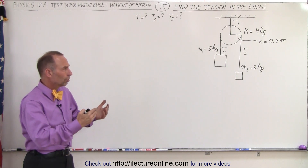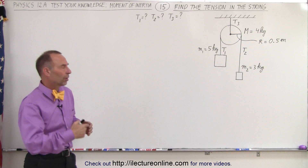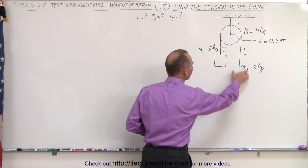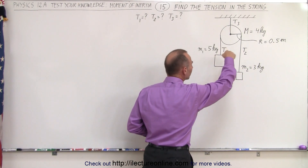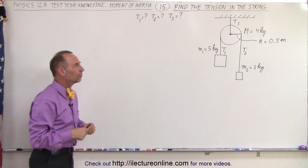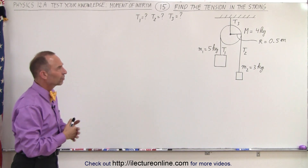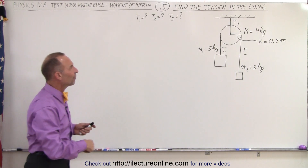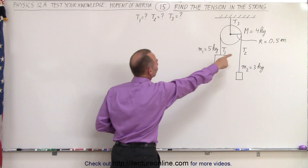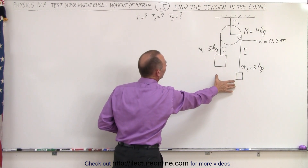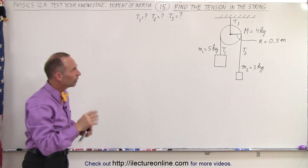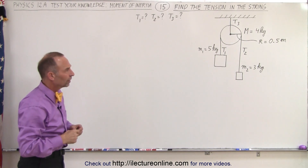When we let things go, there's going to be an acceleration. The heavy weight is going to go down, the light weight is going to go up, the pulley is going to start rotating, there's going to be an angular acceleration, and they want us to find the tension in the two strings that support the two weights and the tension holding the pulley to the ceiling.